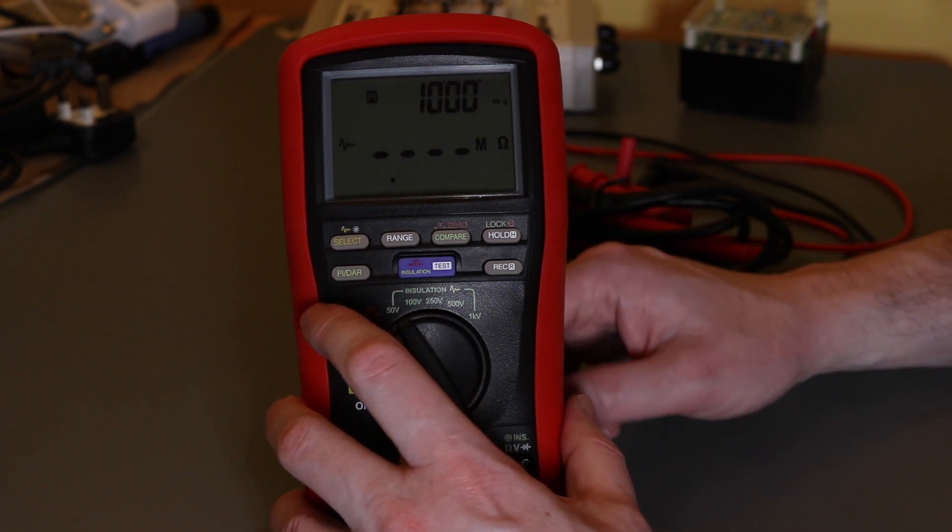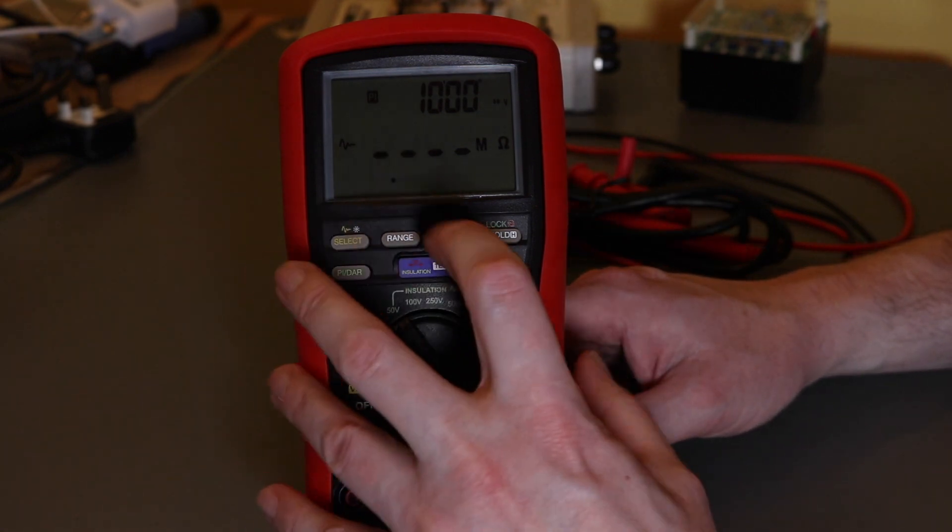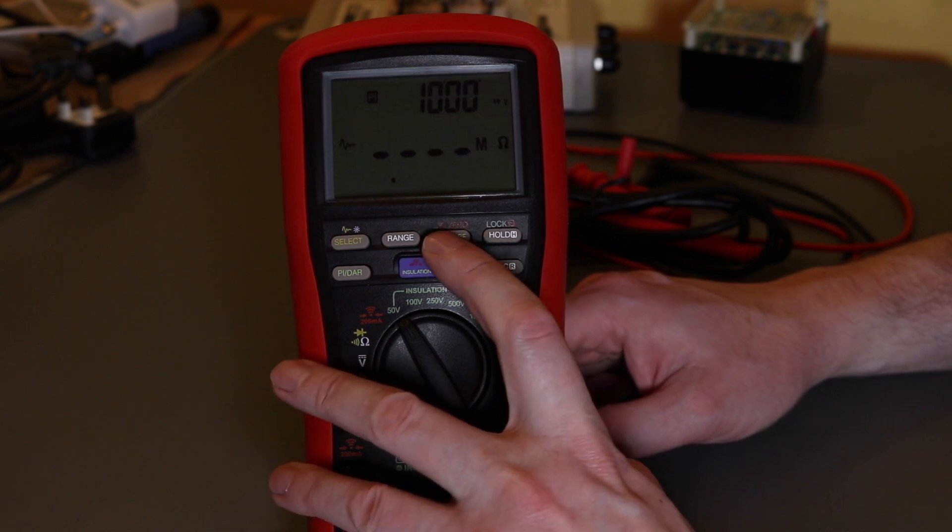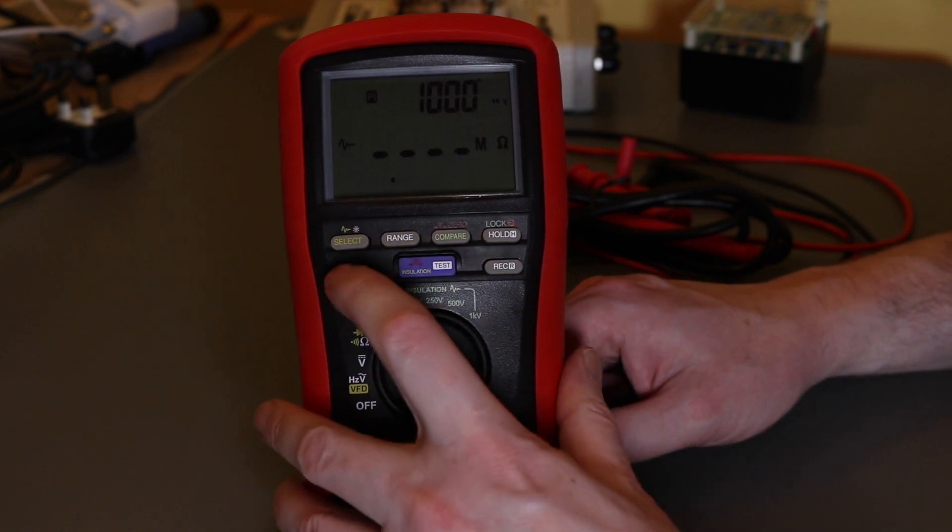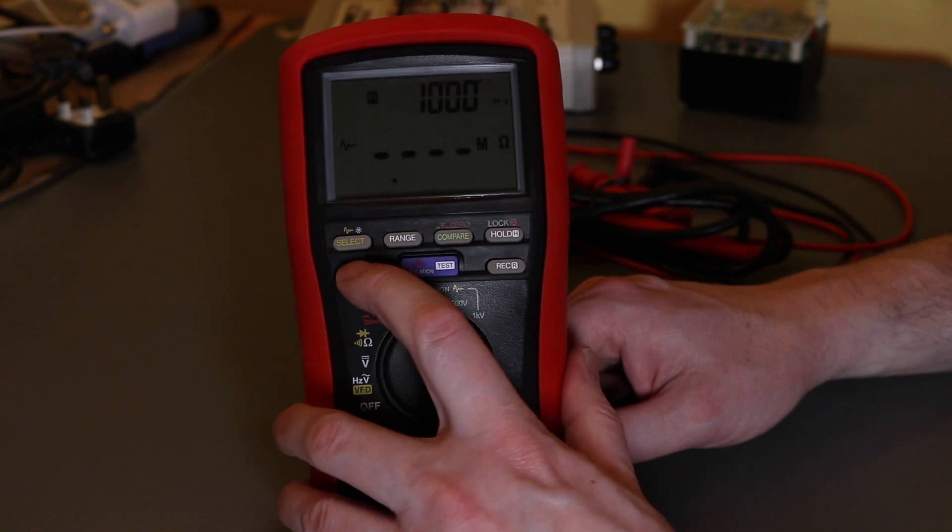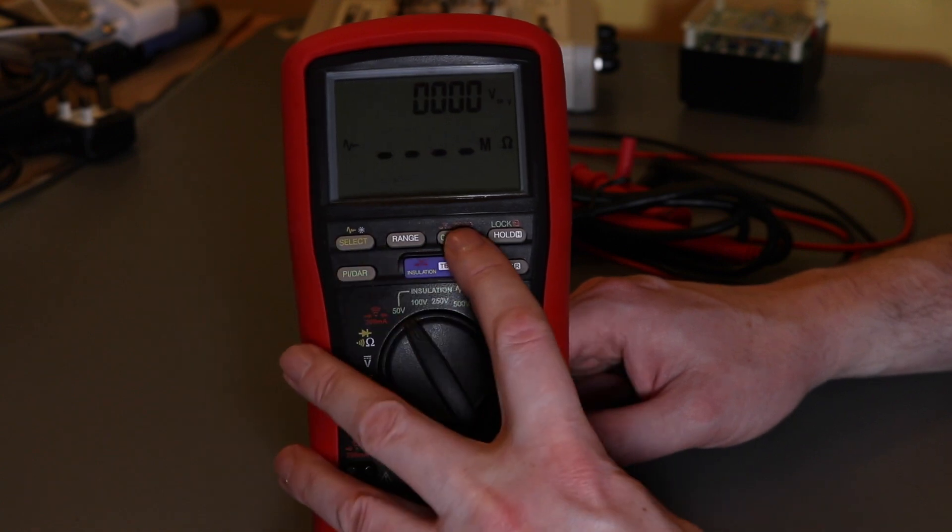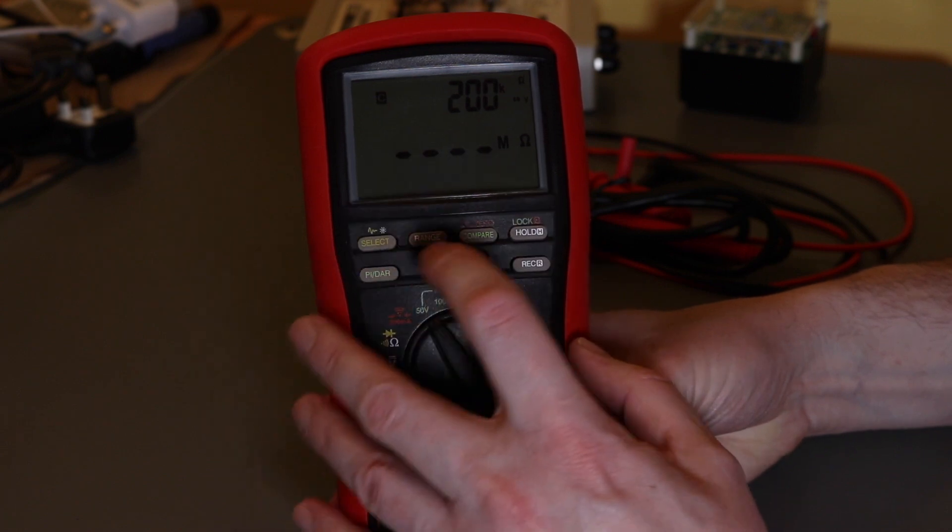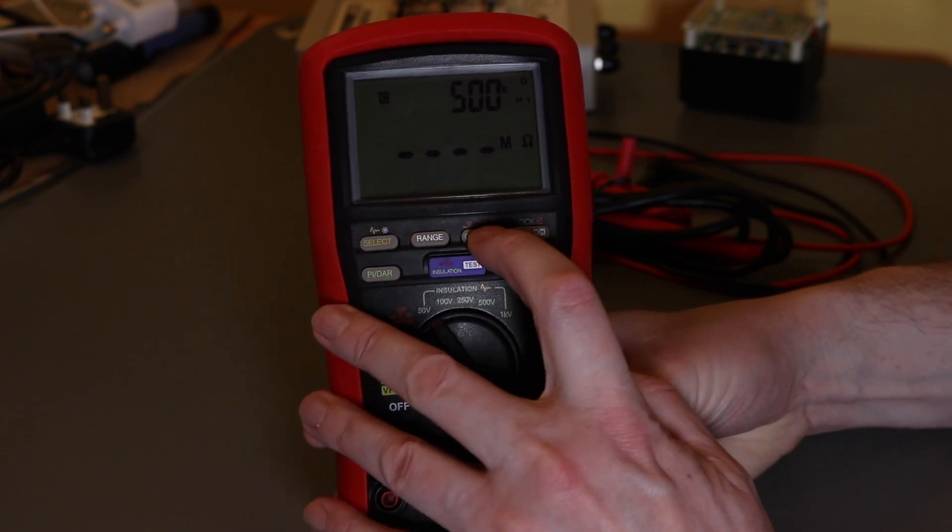You also have in insulation test modes a compare function that you can't do when you're on PI and DAR. So get rid of those and you hit that button once and it brings up the previous value. It's set to 200k ohm on this, and you just keep pressing the button to select predefined values.